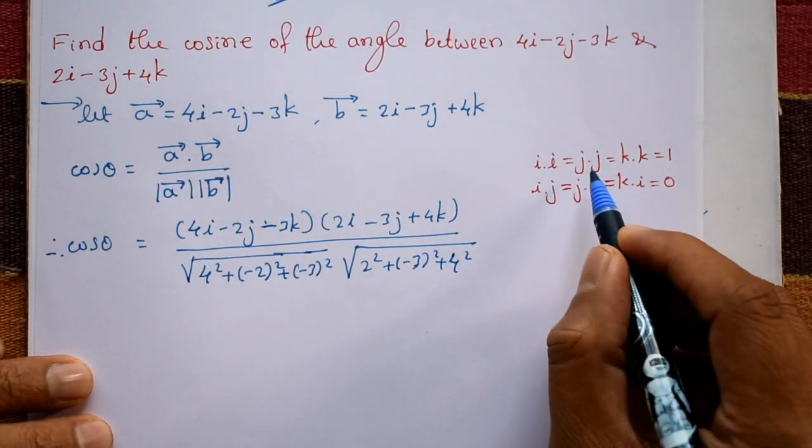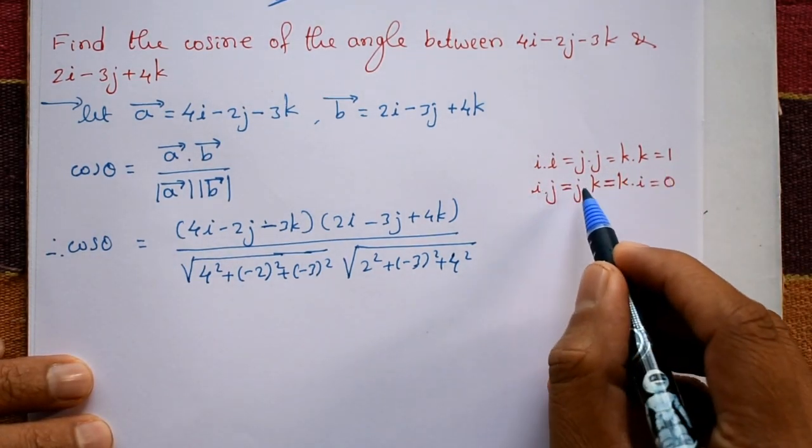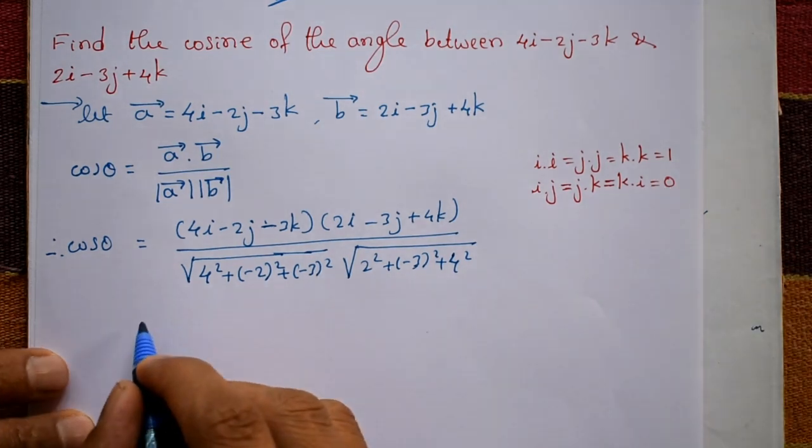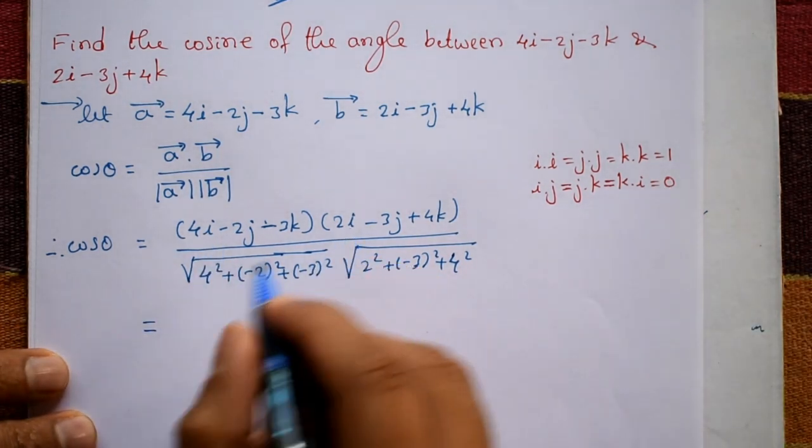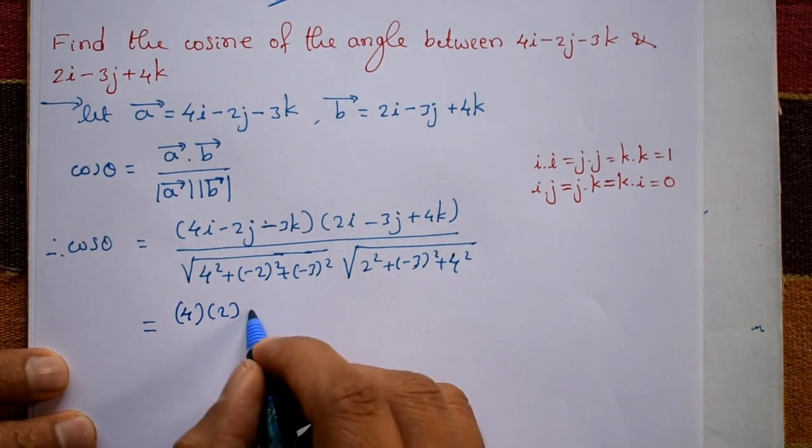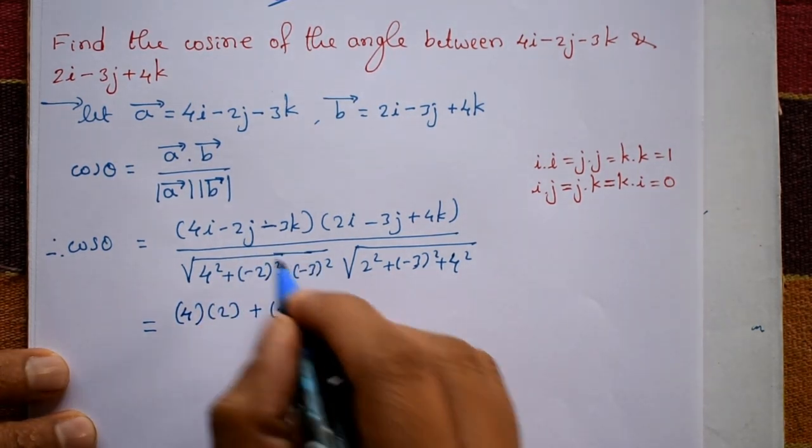Now i into i, j into j, k into k is 1. i into j, j into k, k into i is 0. This is equal to taking i into i: 4 into 2 plus minus 2 into minus 3 plus minus 3 into plus 4.